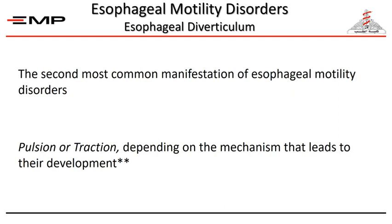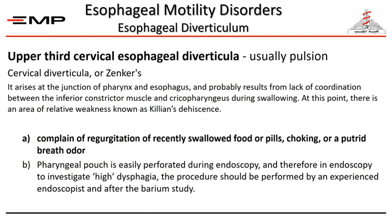The second esophageal motility disorder is esophageal diverticulum. We have two types: traction and pulsion. Pulsion results from increased intraluminal pressure; traction results from the wall being pulled by external forces such as lymph node inflammation and fibrosis. In the esophagus, the diverticulum occurring in the upper third is the Zenker's diverticulum, resulting from the cricopharyngeal muscle failing to relax during swallowing. The resulting high pressure pushes the mucosa to bulge from a weak area called Killian's dehiscence.